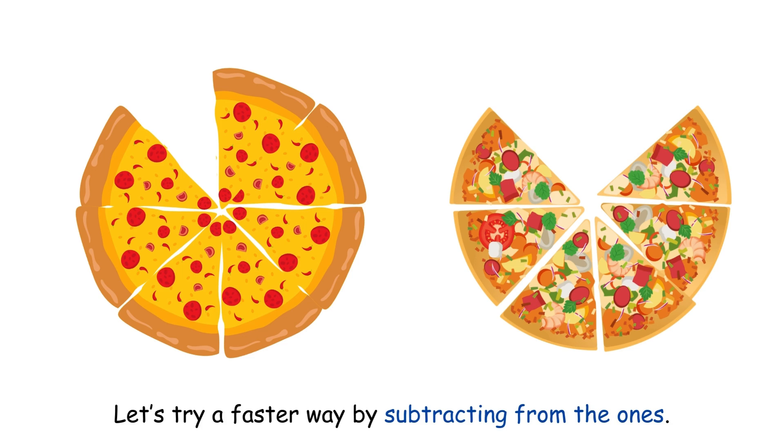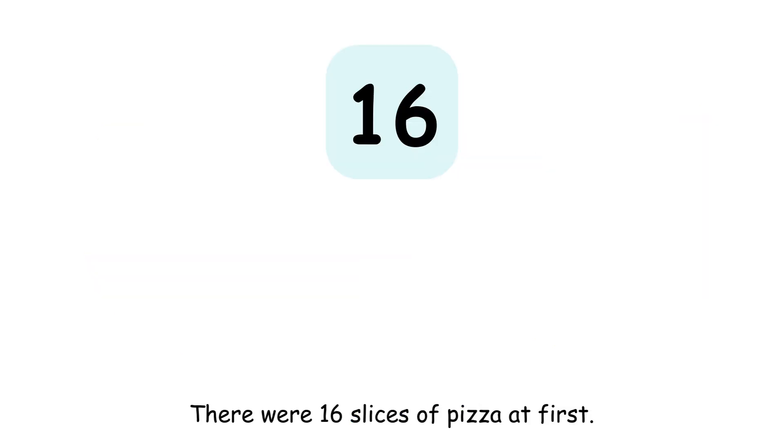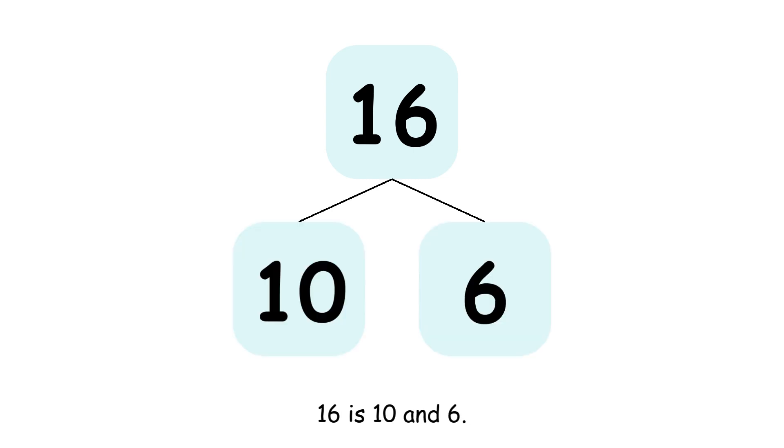Let's try a faster way by subtracting from the ones. There were 16 slices of pizza at first. 16 is 10 and 6.